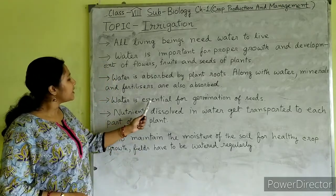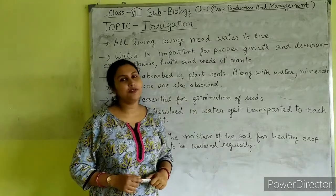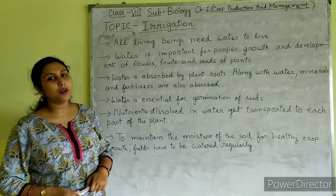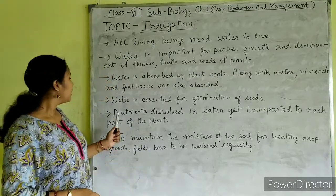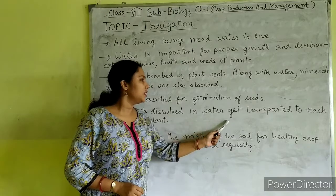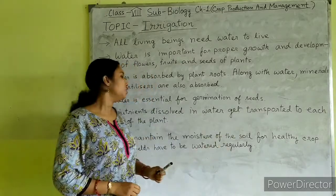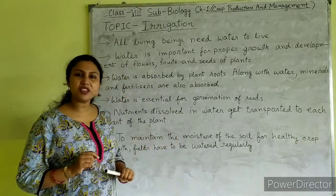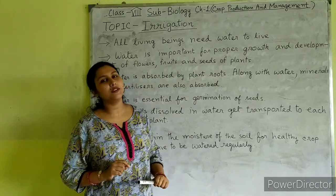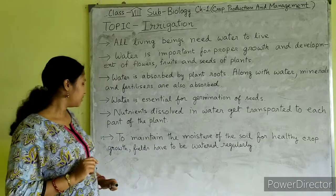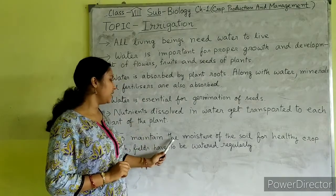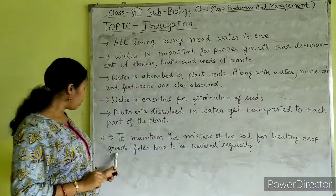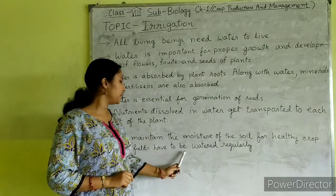Water is essential for germination of seeds and for proper growth of seeds. Nutrients dissolving in water get transported to each part of the plant, and these nutrients are very much essential for the proper growth and development of the plant. To maintain the moisture of the soil for healthy crops, fields have to be watered regularly.